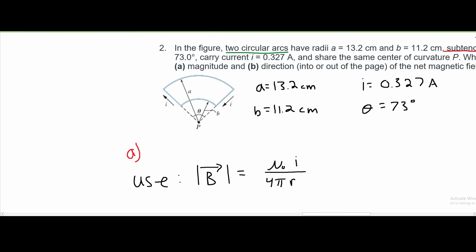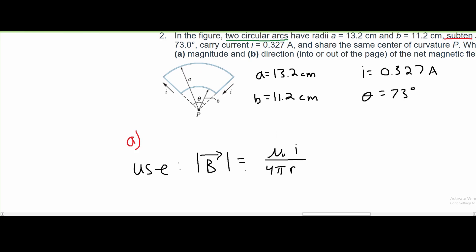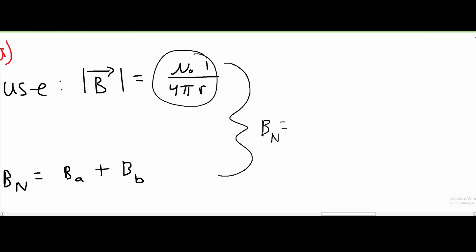Since we have two circular arcs, we have B_N equals B_A plus B_B, since we need to find both of them. If we combine these together and start plugging this into our equation for its respective subscripts, there are a few constants that we can factor out.